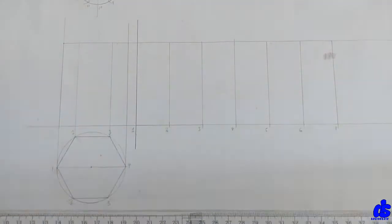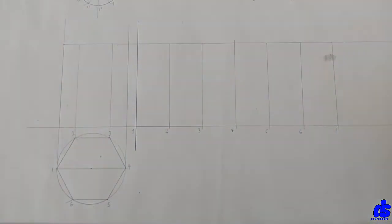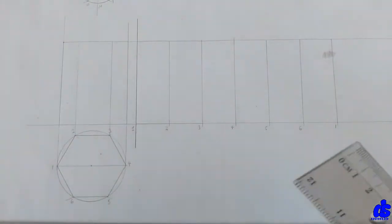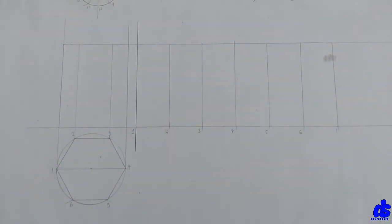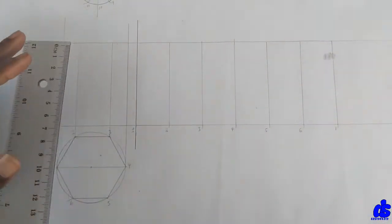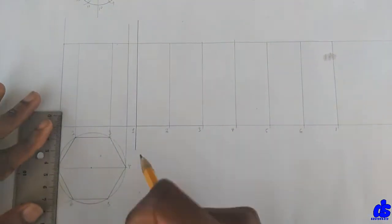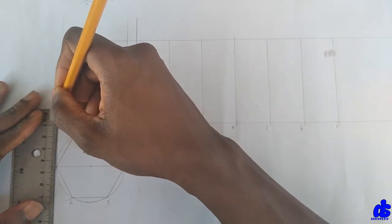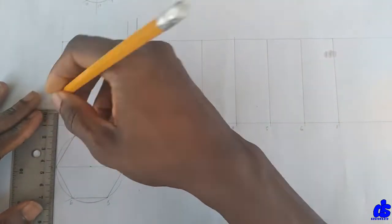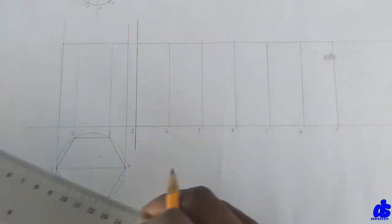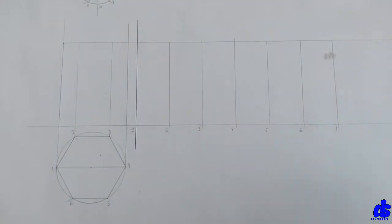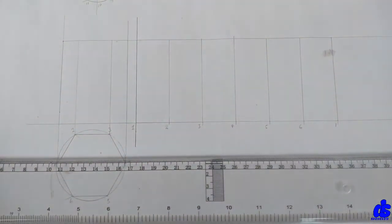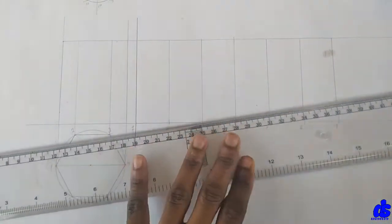Alright, so let's begin. We have to introduce the cutting plane here and draw the true shape. I'm going to measure 10 millimeters away — that's 10 millimeters. Now draw the cutting plane which is at an angle of 45 degrees.